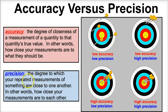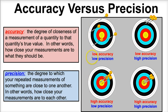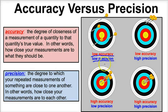Precision is the degree to which your repeated measurements of something are close to one another — how close your measurements are to each other. If each one of these darts represents a different measurement, these measurements are far away from one another, so they're not very precise at all. We have low accuracy because we're far away from the bullseye, and we have low precision because these four darts are far away from one another.